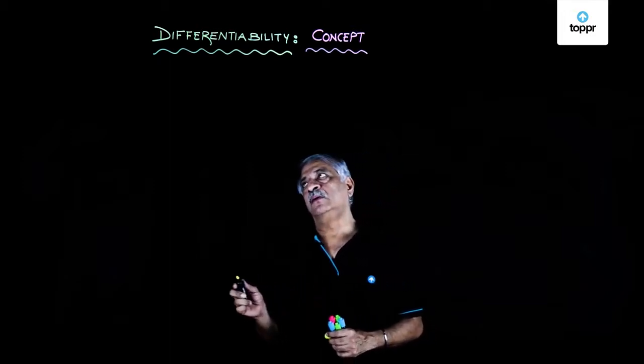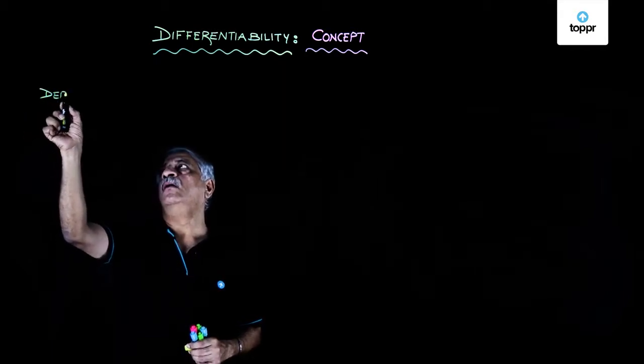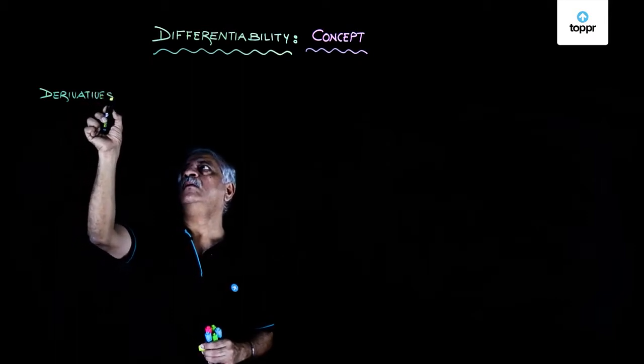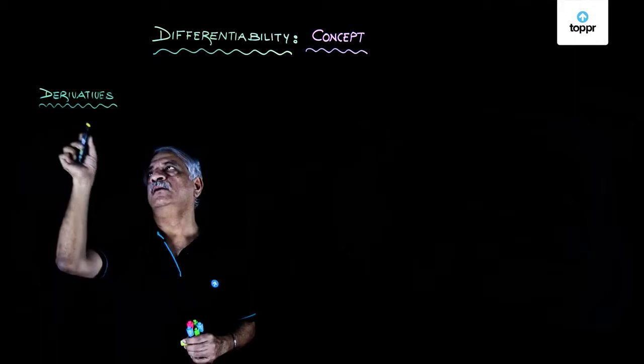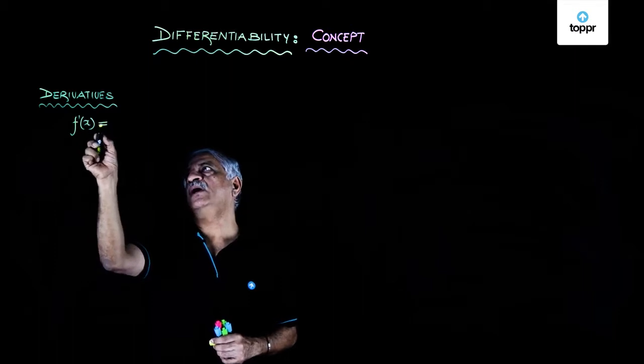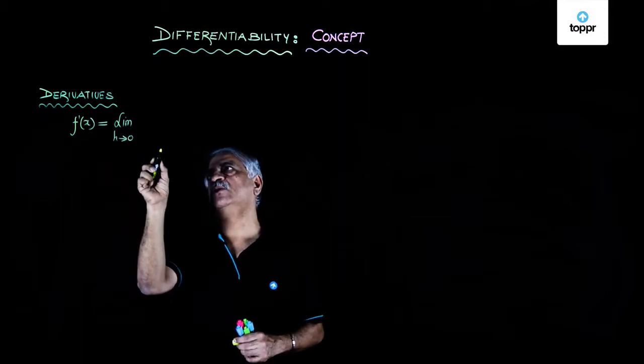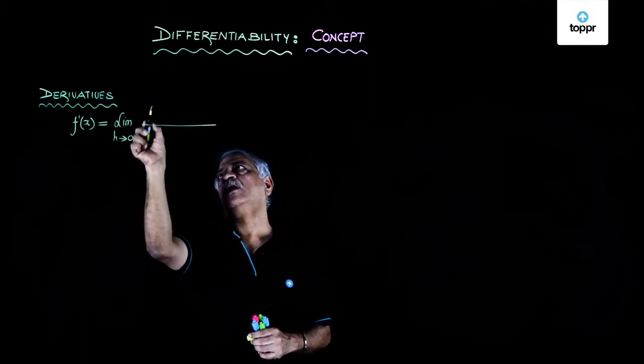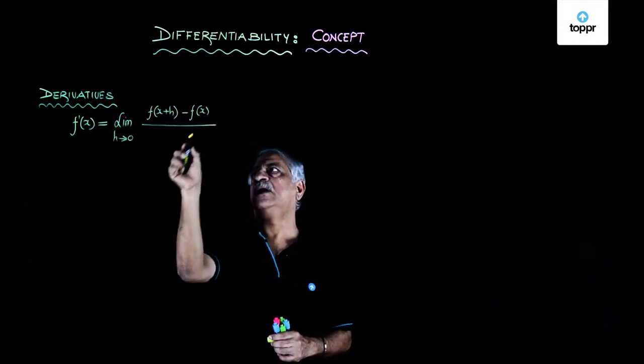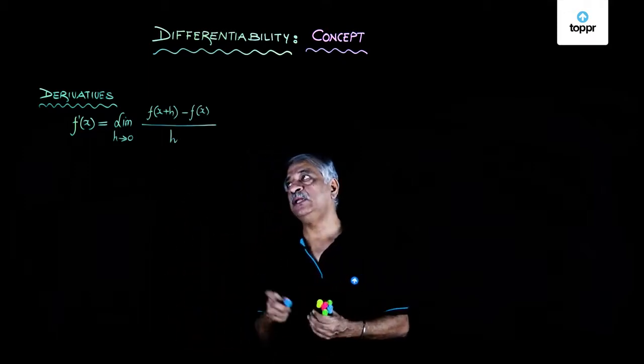While doing derivatives, we have learned that derivative of a function f'(x) is given by limit as h tends to 0, f(x+h) - f(x) upon h. This is what we learnt while doing the derivatives.